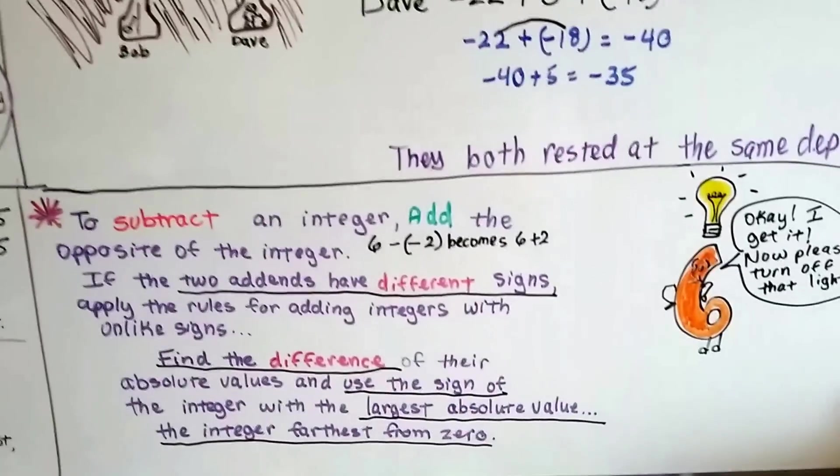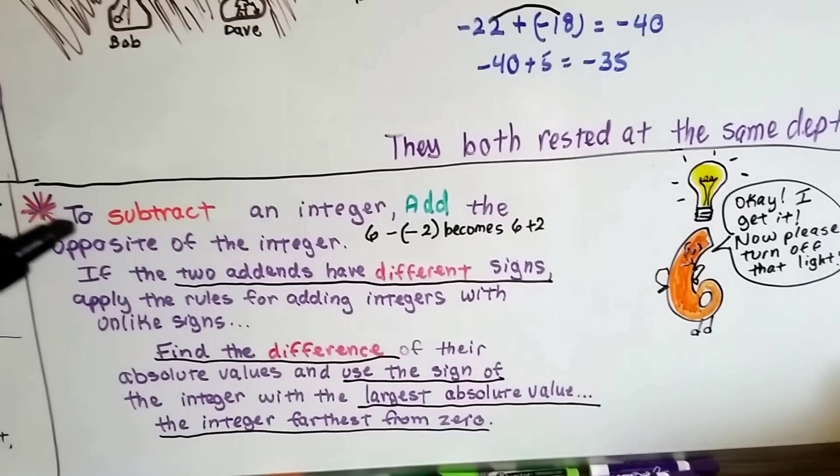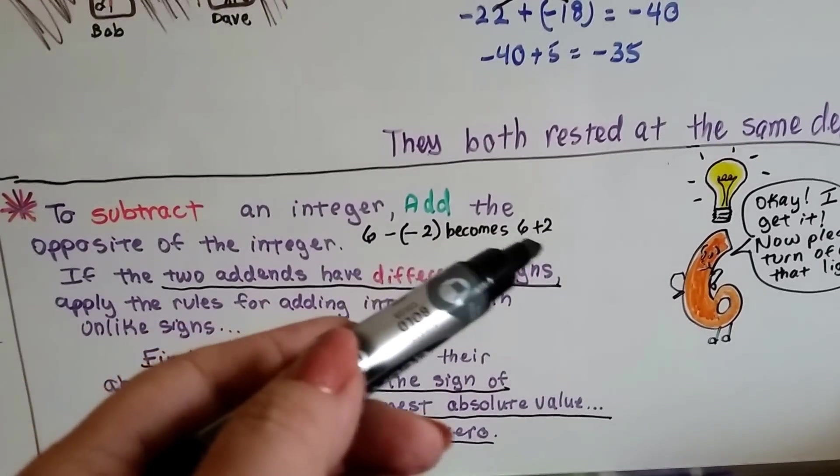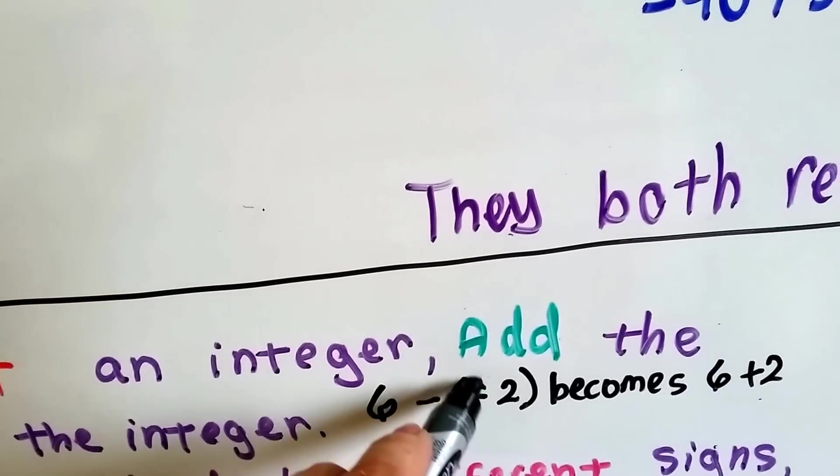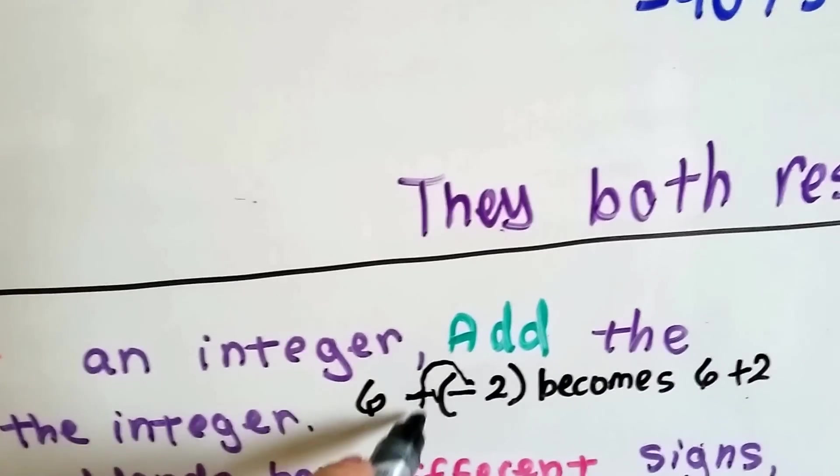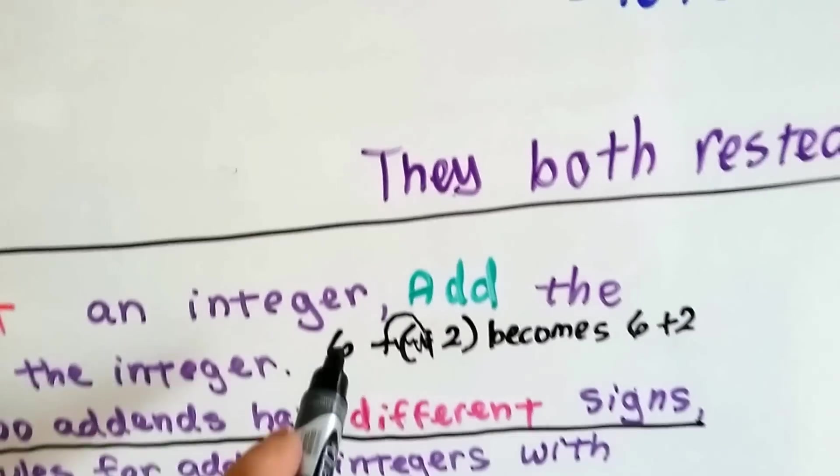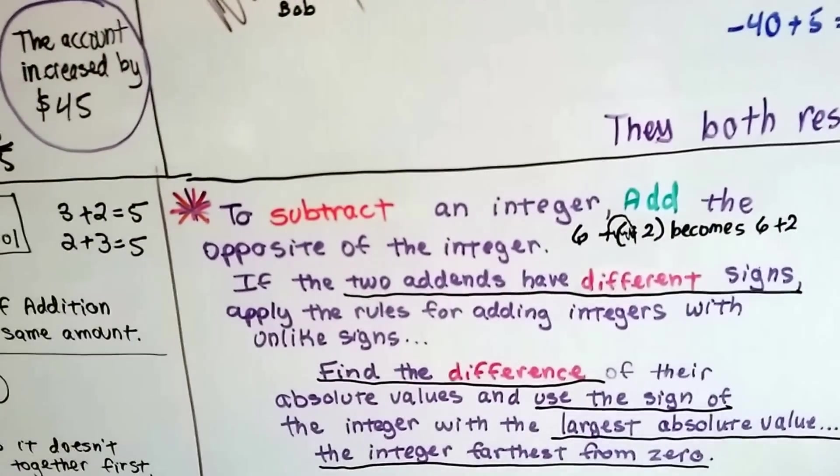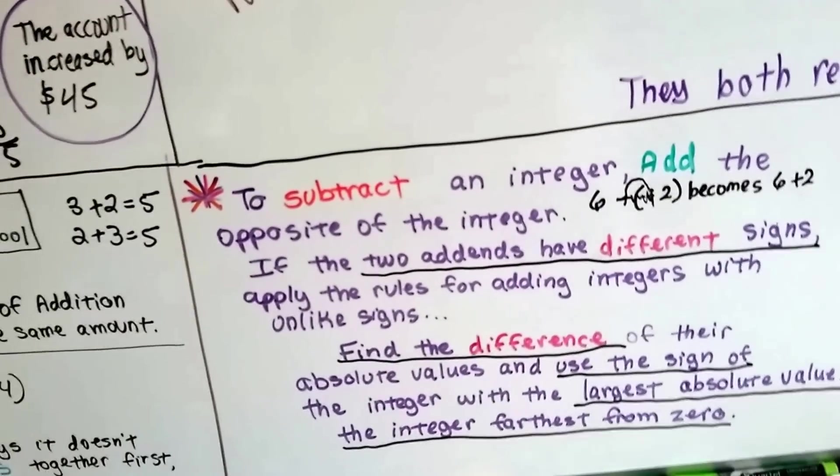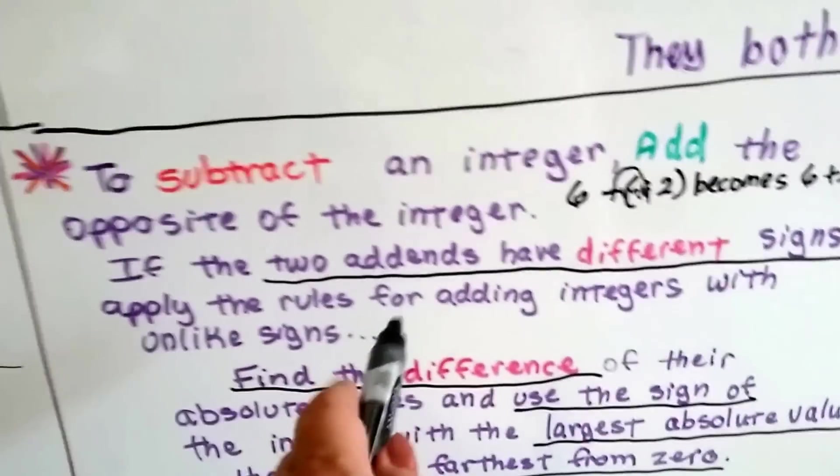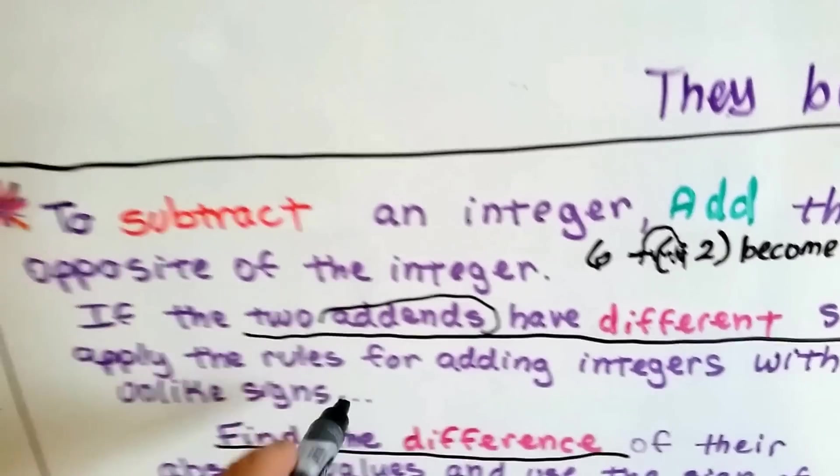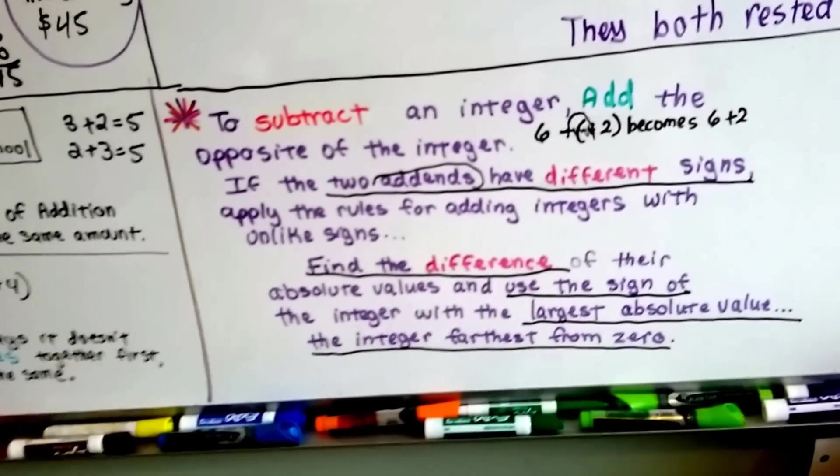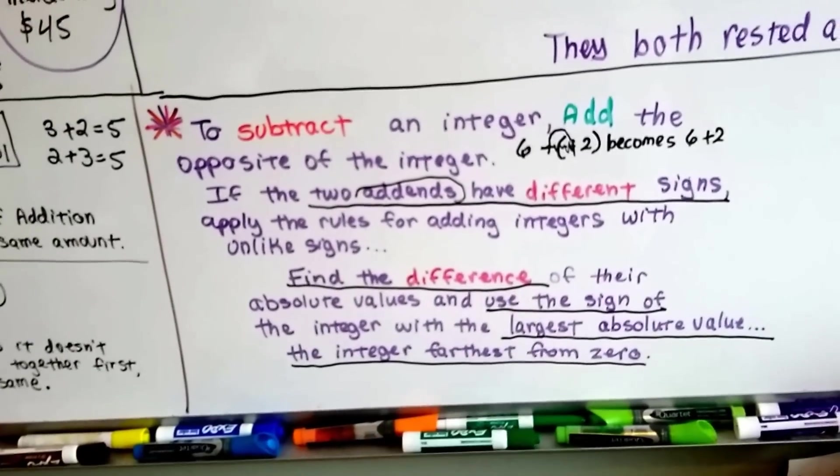Here's what you need to remember. When we subtract an integer, we add the opposite of the integer. Like 6 take away negative 2 becomes 6 plus 2. When we're adding and they have different signs, we find the difference. We apply the rule for adding integers with unlike signs. If they have different signs when we're adding. Make sure you understand that this is for adding. When we're adding and they have different signs, you find the difference. Then, we use the sign of the largest absolute value, the one farthest from zero, to help us know what sign to use.